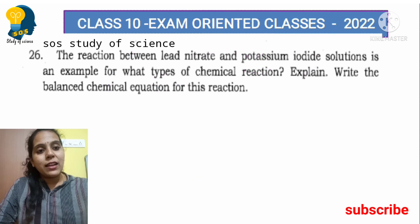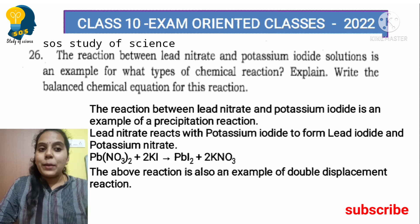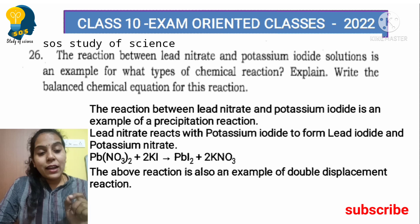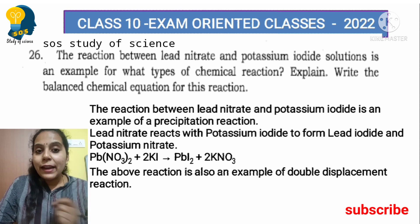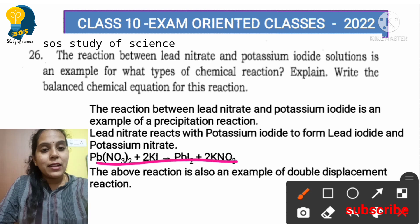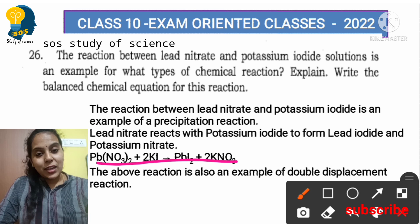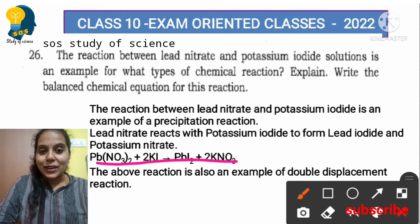The answer: the reaction between lead nitrate and potassium iodide is an example for precipitation reaction. Lead iodide and potassium nitrate KNO₃ are formed. Observe how the equation is balanced — a video link for how to balance equations in the easiest way is provided in the description. Try to balance it yourself and mention your answer in the comment area.